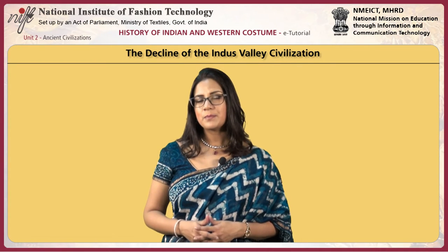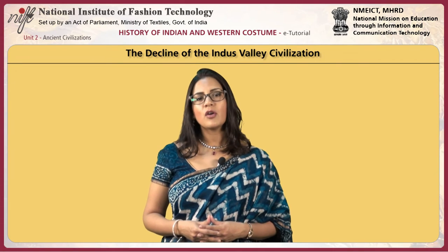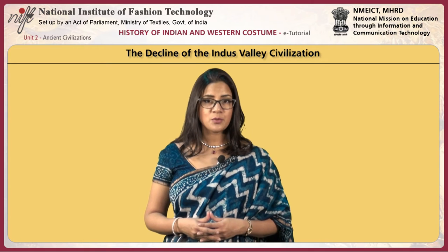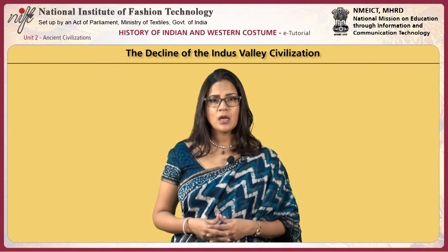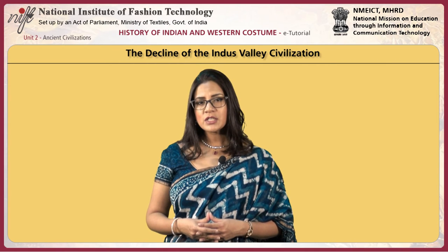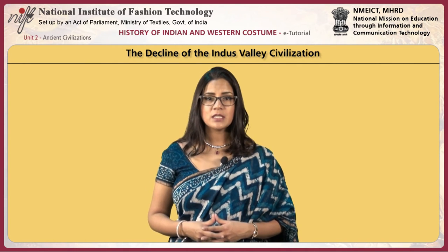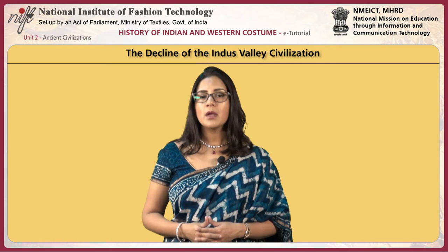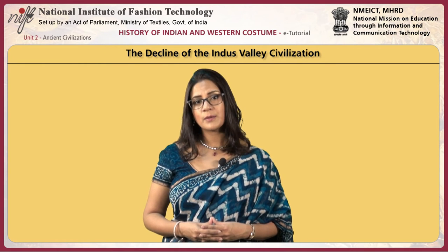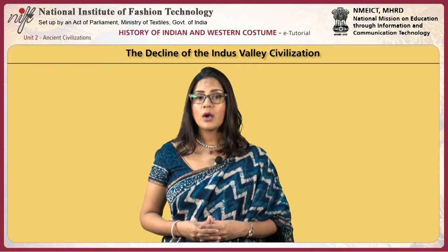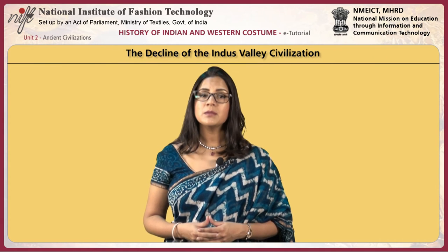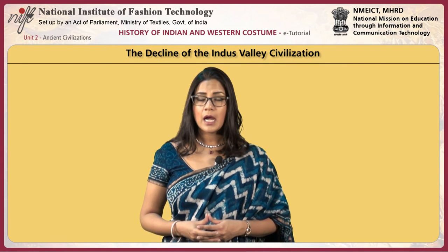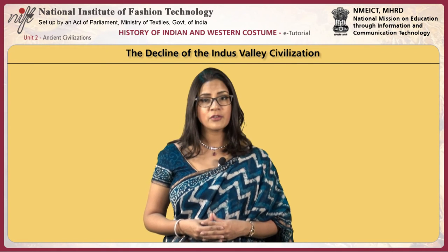By 1800 BCE, the Indus Valley civilization saw the beginning of its decline. Writing started to disappear. Standardized weights and measures used for trade and taxation purposes fell out of use. The connection with the Near East was interrupted, and some cities were gradually abandoned. The reasons for this decline are not entirely clear, but it is believed that the drying up of the Saraswati River — a process which had begun around 1900 BCE — was the main cause. Other experts speak of a great flood in the area. Either event would have had catastrophic effects on agricultural activity, making the economy no longer sustainable.